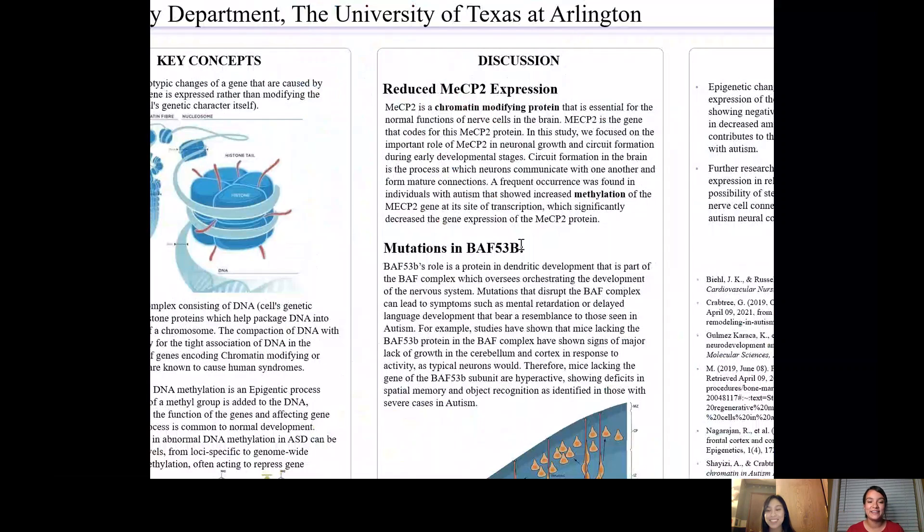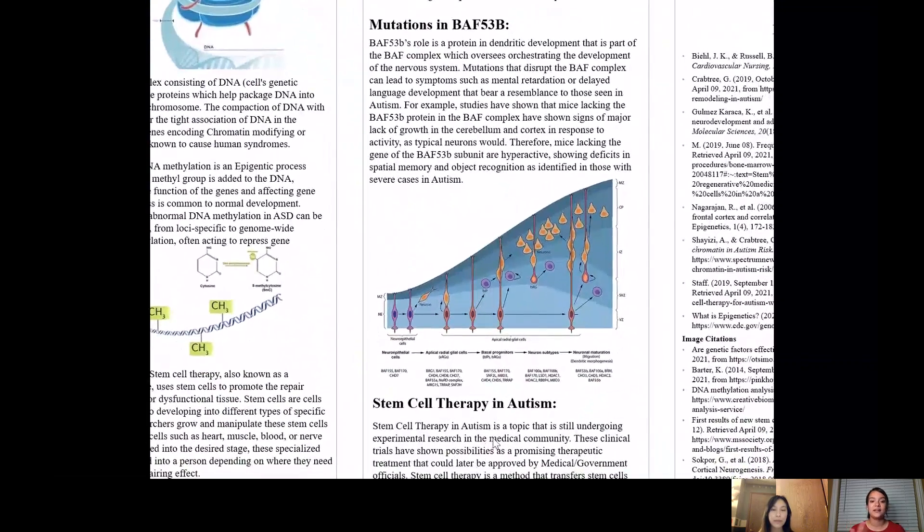Additionally, the BAF53B protein is a subunit of the BAF complex that plays a major role in dendritic development where neurons receive information across their neuronal junctions in the nervous system. A clinical study in mice demonstrated that if they lack the BAF53B protein, they express symptoms such as those that resemble autism.